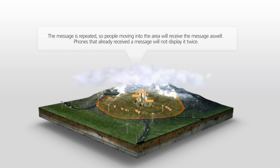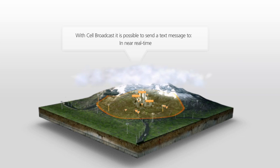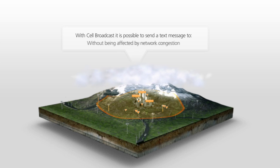Phones that already received the message will not display it twice. With cell broadcast, it's possible to send a text message to millions of subscribers in near real time, with specific location information, including visitors from other countries, in the desired language, without being affected by network congestion.